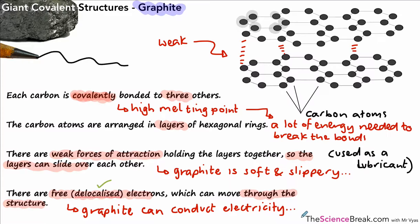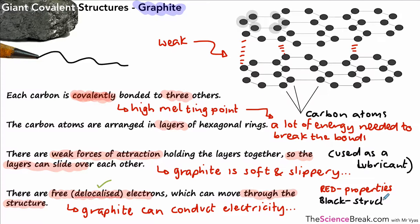It's worth noting that everything written in red represents a property or feature of graphite, and everything written in black is the reason for that property. For example, if asked why graphite is soft and slippery, that's the property — and the reason is that graphite is made in layers with weak forces of attraction between them.